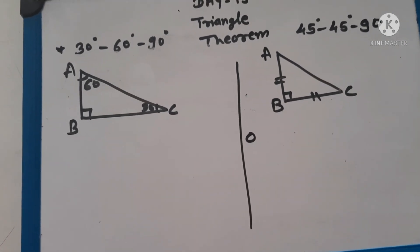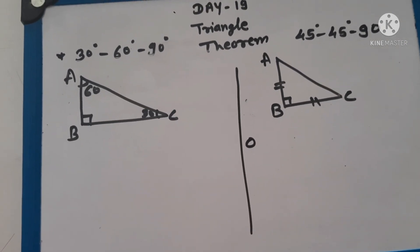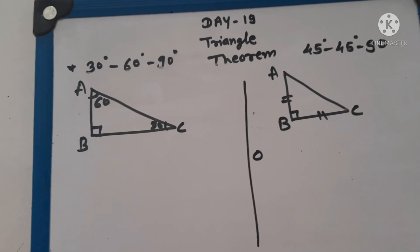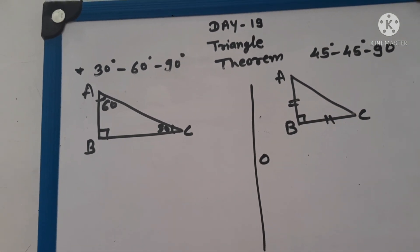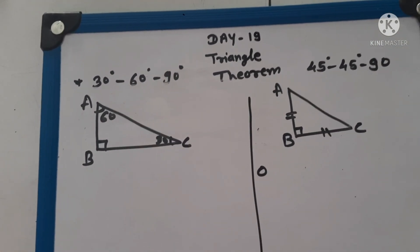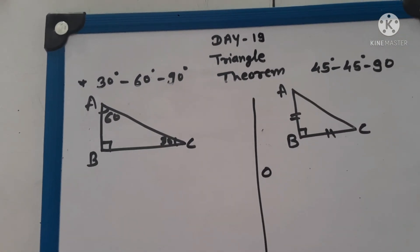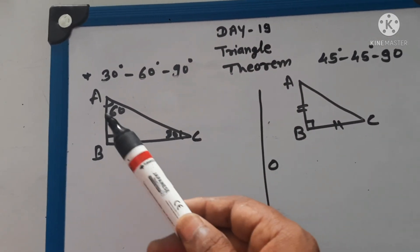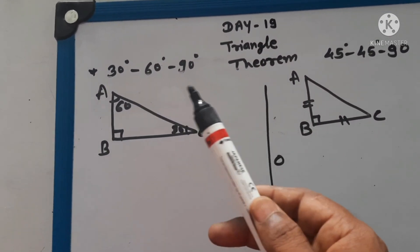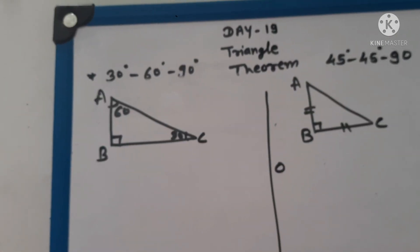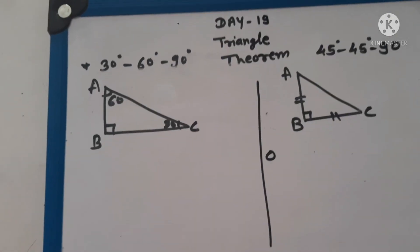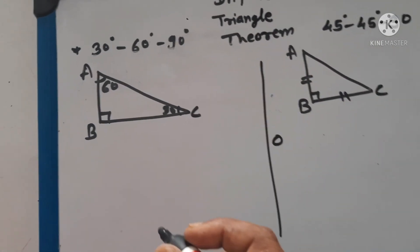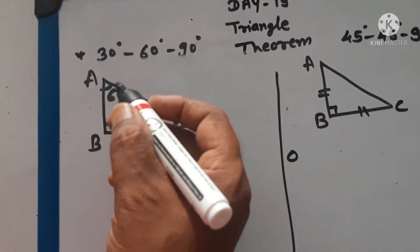Now, in the bridge course day 19, we learn about the triangle. In that triangle, there are two theorems. First one is 30-60-90 and another one is 45-45-90. We learn about the first theorem.